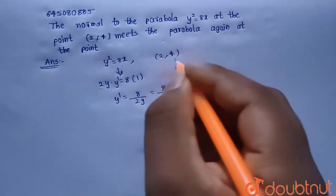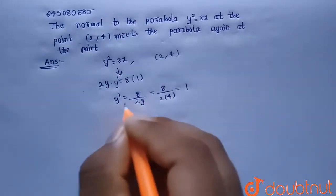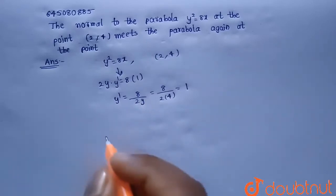Because we are finding the slope at this point. So from this it will be equals to 1. This is the slope of the tangent but we want to find the slope of the normal.